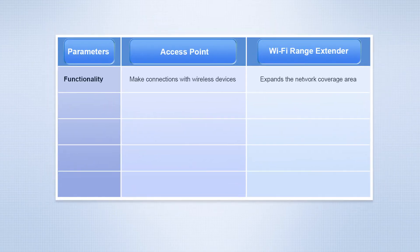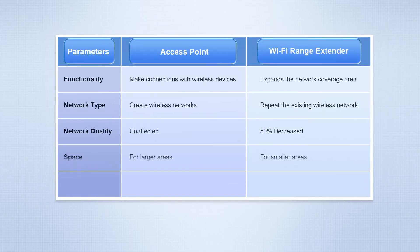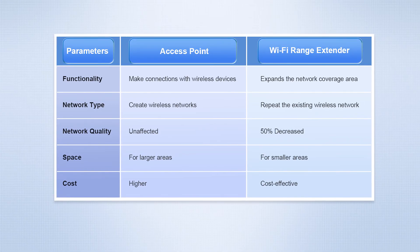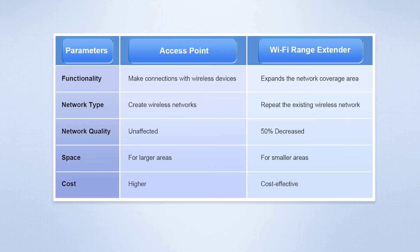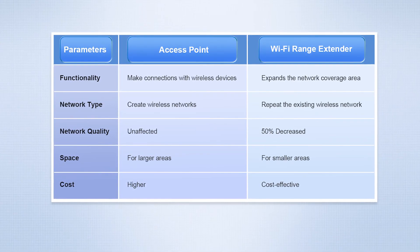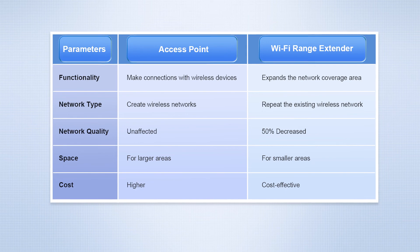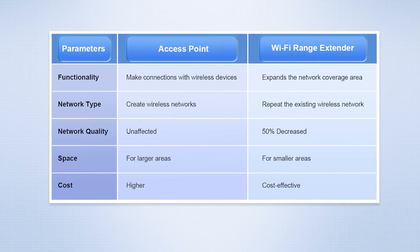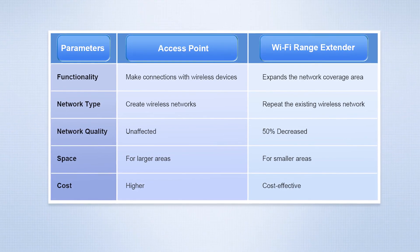Therefore, if you don't demand extreme network speeds and there is no wiring at home, we recommend choosing a Wi-Fi extender. Conversely, if you seek high speeds and have a large home with existing wiring, we recommend an AC plus AP combination.